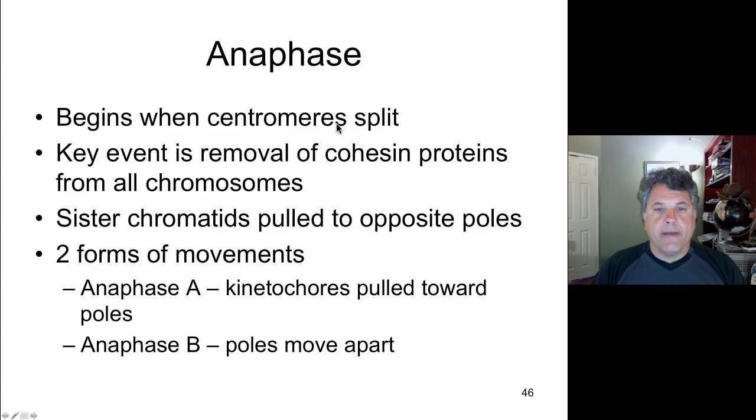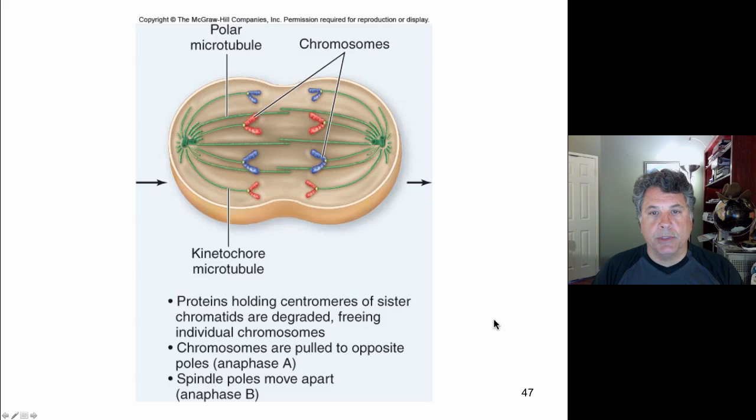We've been considering the anaphase stage of mitosis and talked about the two parts of anaphase in which the kinetochores are pulled toward the poles and then the poles are moved apart. Both are mechanisms to separate the sister chromatids from each other, which after separation we now refer to as chromosomes.